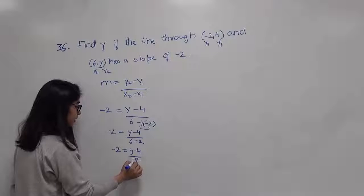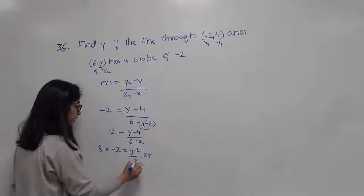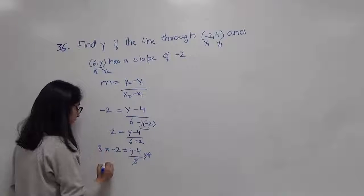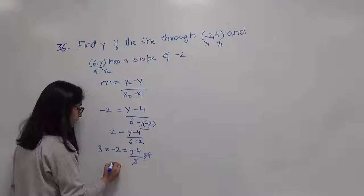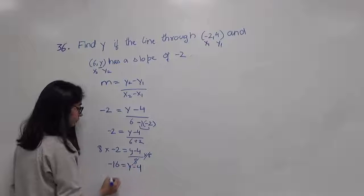Now multiplying 8 both sides, this gets cancelled out. So 8 multiplied by negative 2 is negative 16 equals to y minus 4.